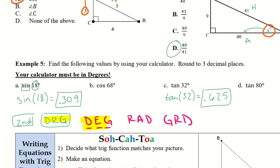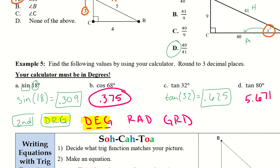Go ahead and try B and D — another tangent and a cosine. For B you should get 0.375, and for D you get 5.671.